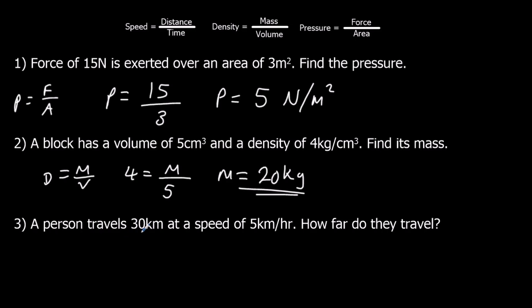A person travels 30 kilometers at a speed of 5 kilometers per hour. Speed equals distance over time. 5 equals 30 over time. They travel 30 kilometers. The time is what we want to work out. 5t equals 30, and then divide by 5. Time is 6, and it's in hours.